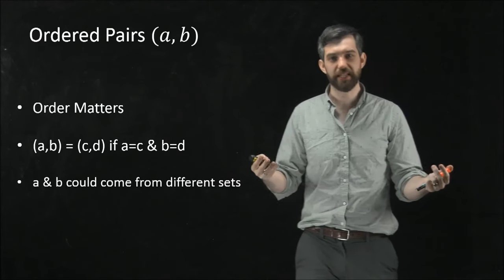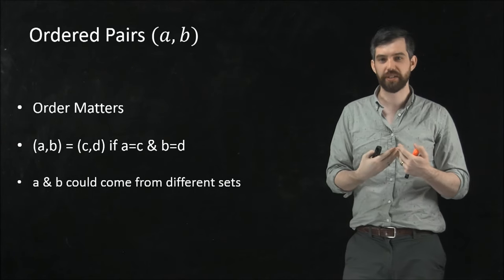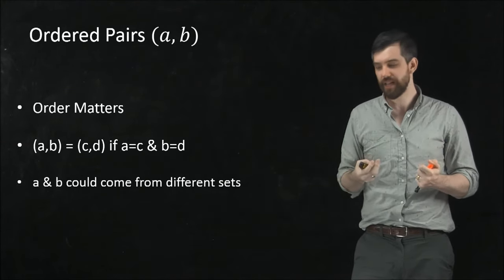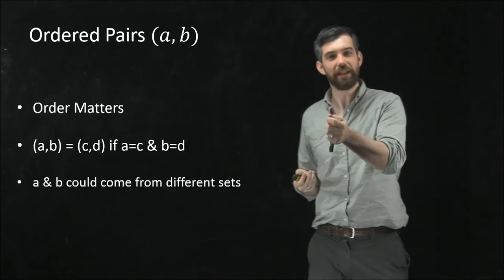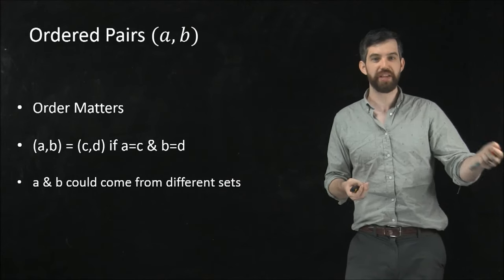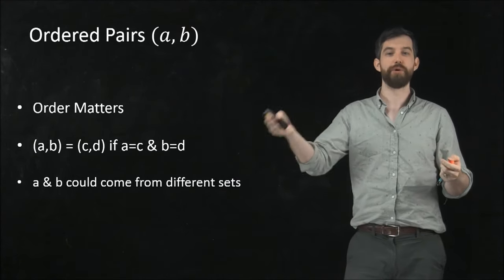So now what I want to do is I want to consider a set whose elements are going to be made up of these ordered pairs. In other words, the individual elements inside of your set are not a number like 1, 2, or 3. The individual elements inside of your set are each themselves ordered pairs.